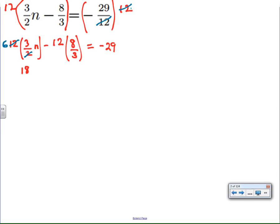And here, one and a half of 12 is 18. And -32. So, 18n minus 32 equals negative 29.